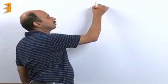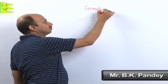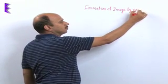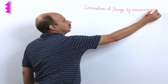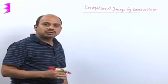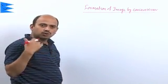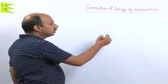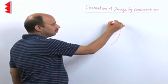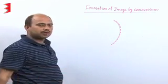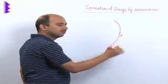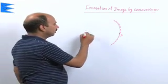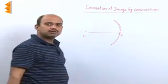Formation of image by a concave mirror — just as we have seen formation of image by a plane mirror, we followed all the rules. Similarly, here we have to follow all rules for obtaining the image. Suppose you have taken a concave mirror; the midpoint of the mirror we take as a pole, and here is the center of curvature. A line joining them straight is known as the principal axis.